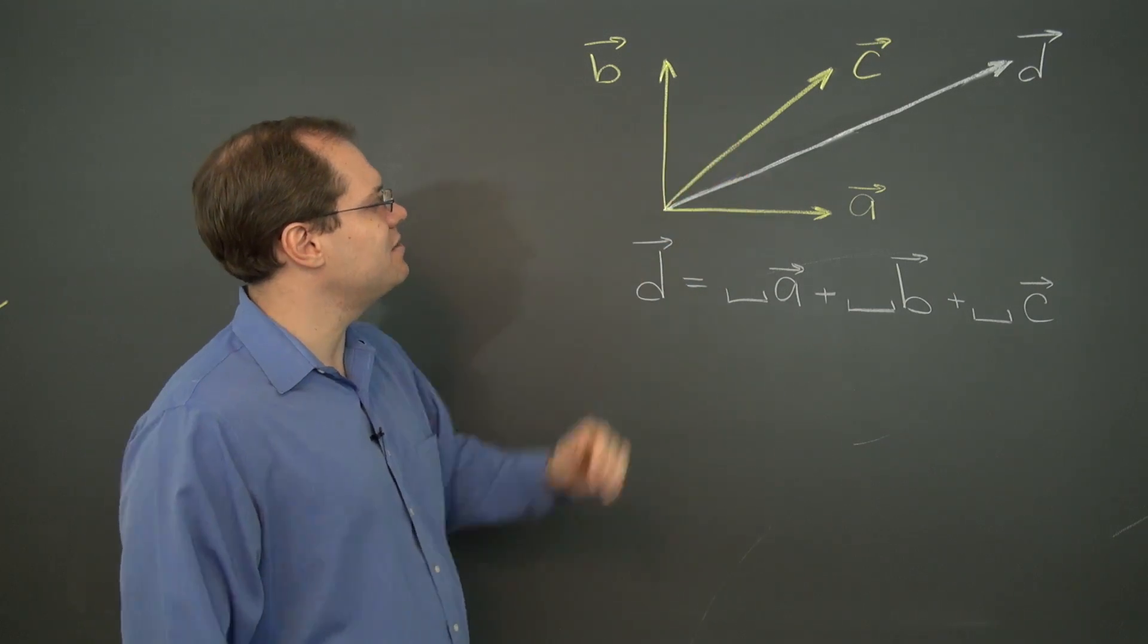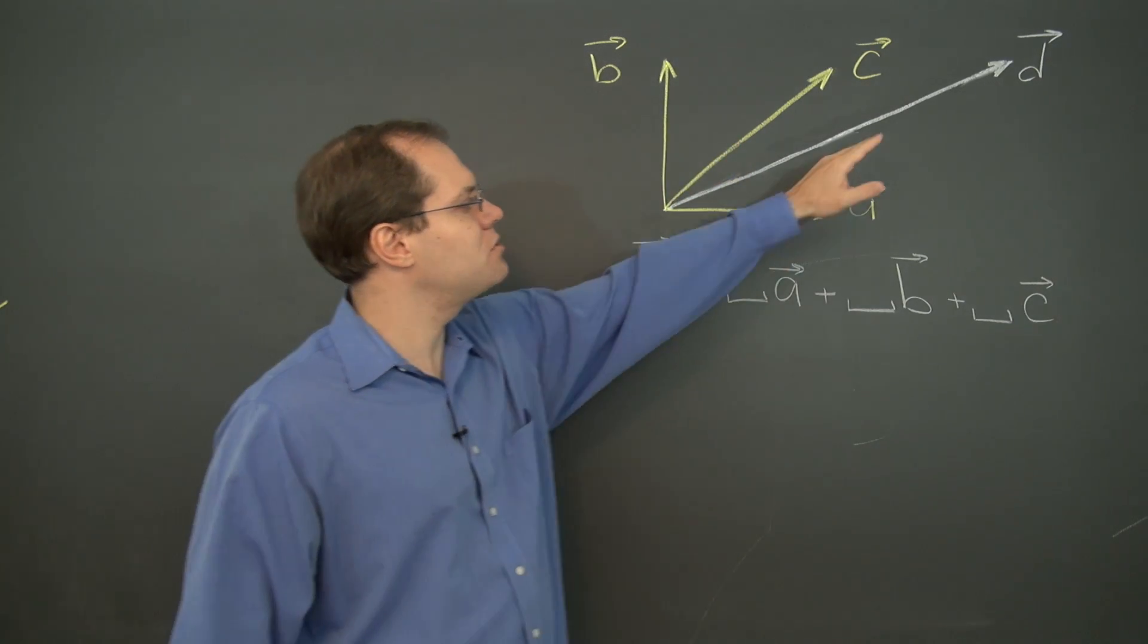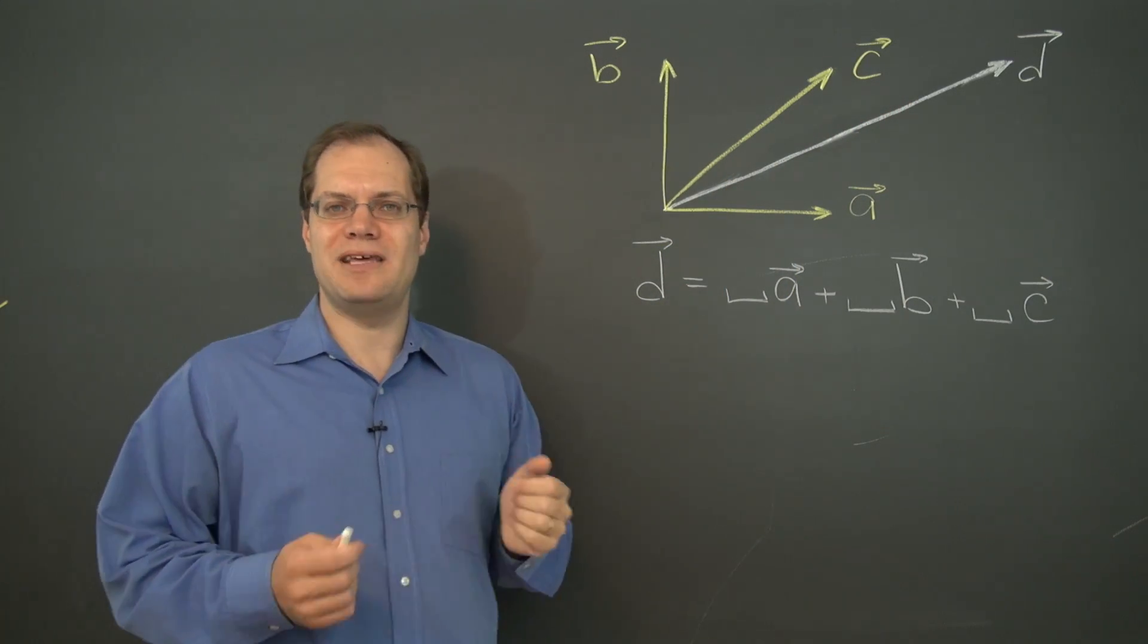So given three vectors a, b, and c, we need to decompose the vector d as a linear combination of a, b, and c.